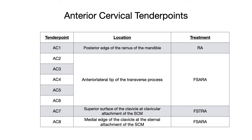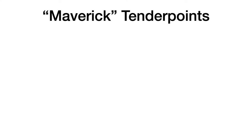Whenever we're talking about anterior cervical tender points, usually the treatment will involve flexion. Most of the treatments here are F-CERA: from AC2 to AC6 it's F-CERA, and AC8 is also F-CERA. The only exceptions are AC1 and AC7, which are highlighted in red in the table. These two tender points are actually known as maverick tender points — tender points that do not resolve when the muscle is shortened.